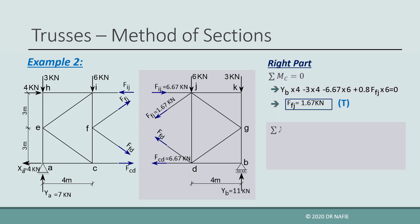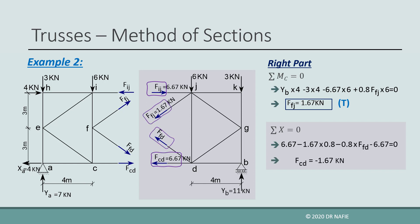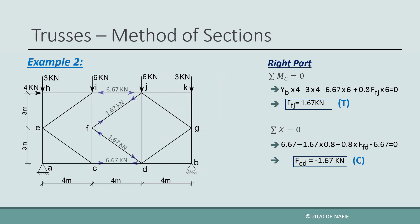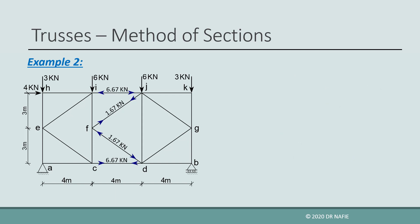Finally, we apply sigma X equals zero to evaluate the force in FD, which is found to be negative 1.67 kN — so it is compression and its direction should be reversed. Now all requested internal forces have been evaluated. If we want, we can apply the third equilibrium equation on this part, or all three equilibrium equations on the left part, to validate the results.